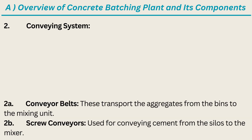2. Conveying System. 2A. Conveyor Belts — these transport the aggregates from the bins to the mixing unit. 2B. Screw Conveyors — used for conveying cement from the silos to the mixer.